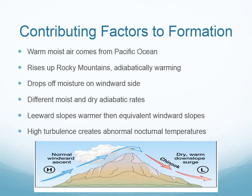The leading factors to the formation of Chinook winds start with warm, moist air coming from the Pacific Ocean. The air then starts to rise up the Rocky Mountains while adiabatically warming. On the windward side of the mountain, moisture is dropped off. Throughout, there are different moist and dry adiabatic rates. The leeward slope is much warmer than the equivalent windward slope.